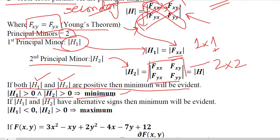And if they have alternative signs, that is one of them is negative and the other is positive, it means that it is a maximum that we are currently at.